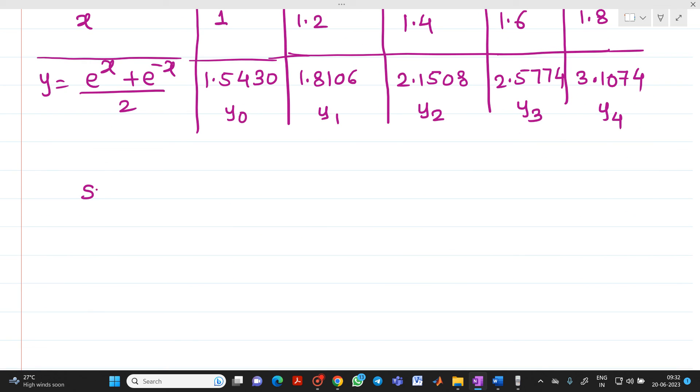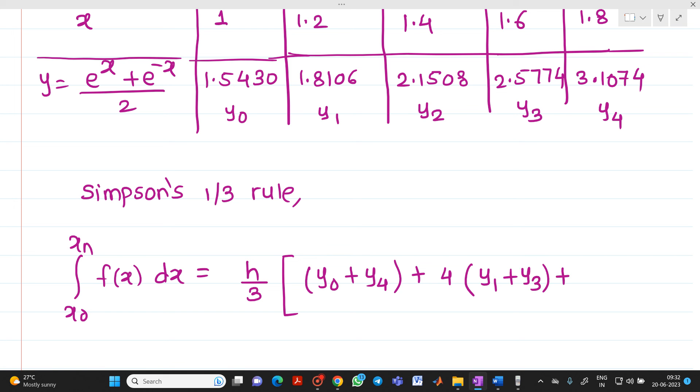Now, we have to write the formula of Simpson's one-third rule. By using Simpson's one-third rule, integration x0 to xn f of x dx will be equal to h by 3 into bracket, sum of first and last ordinate, that is, y0 plus y4, plus 4 into sum of odd values of y-ordinate, that is, y1 plus y3, plus 2 into even values of y-ordinate, that is, 2 into y2. You know what are the values of y0, y1, y2, y3, y4. Already we have seen h equal to 0.2.